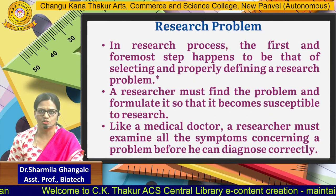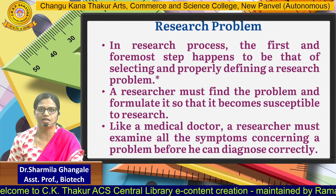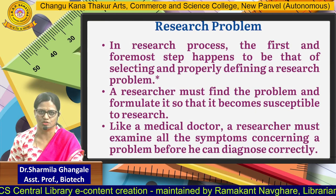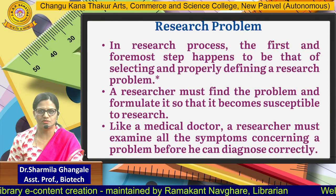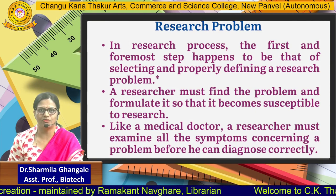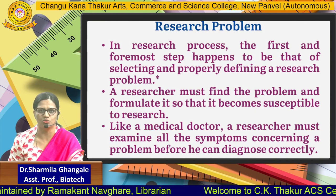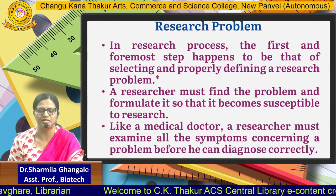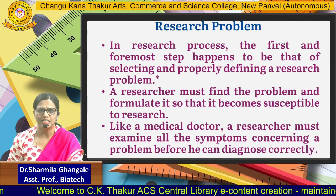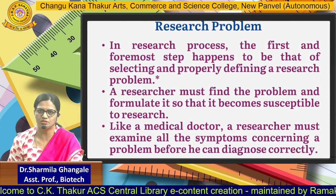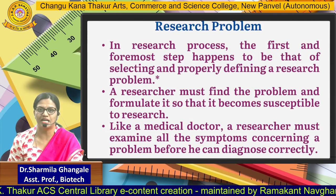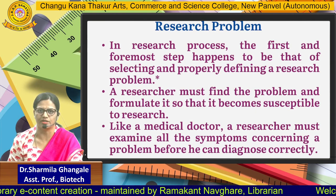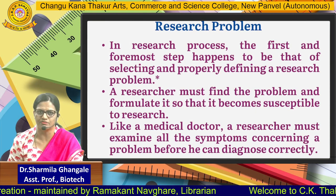In the research process, the first and foremost step is selecting and properly defining a research problem. A research process consists of seven to eight different steps: select the problem, then go through the review of literature, then methodology, then experimentation, then observation, result, conclusion, and so on. The very first step is to select the problem. Unless and until you have the problem, you cannot see the solution for it.